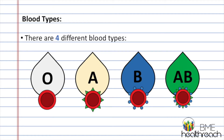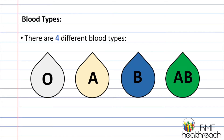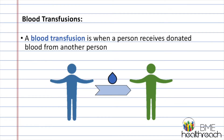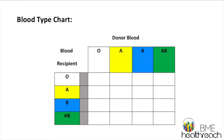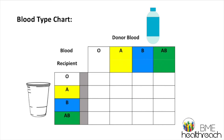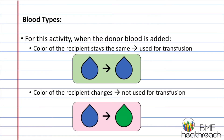Even though all blood types are actually red, today we will use different colors to imagine the different blood types. We will be doing a color mixing activity with primary and secondary colors to represent blood donations. A blood transfusion is when a person receives donated blood from another person. The blood donor is shown in blue and the blood recipient is shown in green. The blood recipient will be represented by the cups, and the blood donor will be represented by the water bottles.